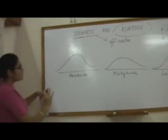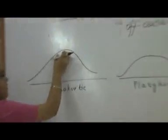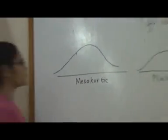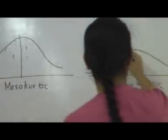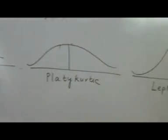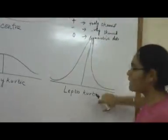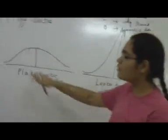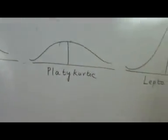Kurtosis measures the way values are bundled across the centre of the distribution. The values are bundled very closely towards the centre in a leptokurtic distribution, whereas they are more dispersed in a mesokurtic distribution, and still more dispersed in a platykurtic distribution.